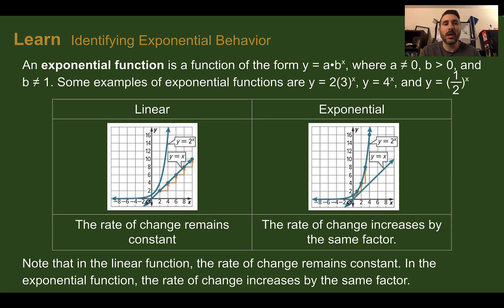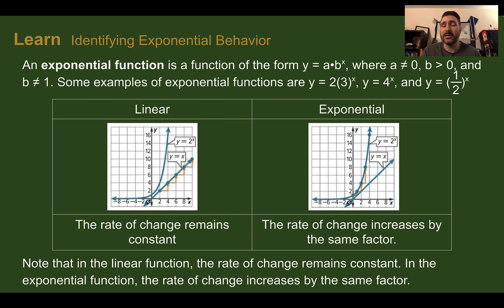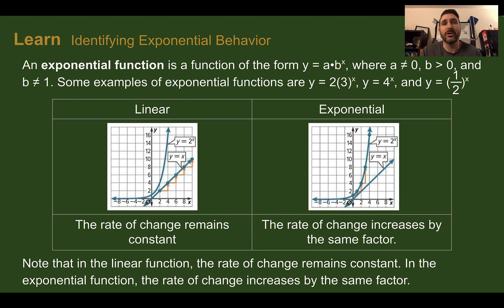An exponential function is a function in the form y equals a times b to the x power, where a cannot be zero, because you can't start with zero, and b is going to be greater than zero, and b cannot be one, because if you keep multiplying by one, nothing's changing. Some examples of exponential functions are y equals two times three to the x power, y equals four to the x power, and y equals one-half to the x power. In those last two, the a value is just one, so really one times four to the x.